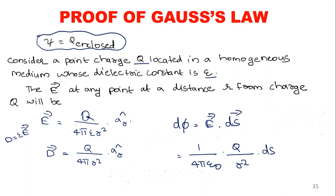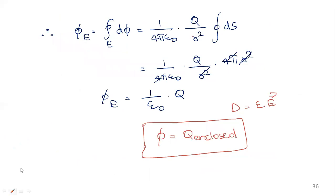The electric flux density D is related to E, and the differential flux is dΦ = D · dS. Substituting, the electric flux density becomes one over four pi epsilon zero into Q over r squared into dS. The total electric flux Φ equals the integral over surface S of dΦ, which is one over four pi epsilon zero into Q over r squared times the integral of dS over the surface, which equals four pi r squared.